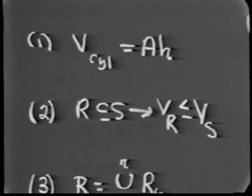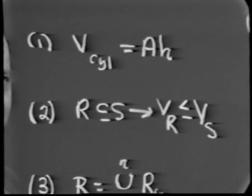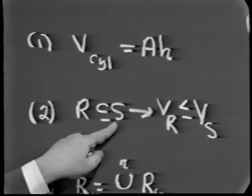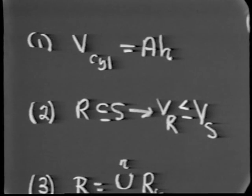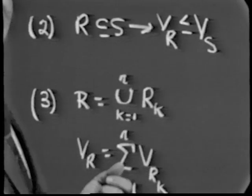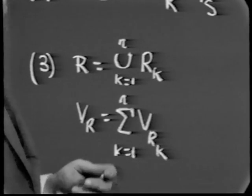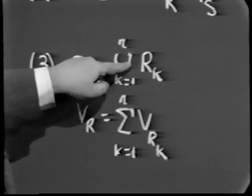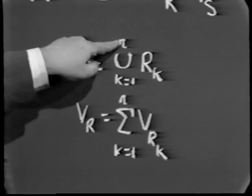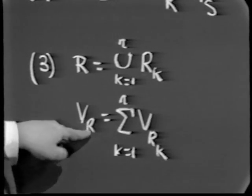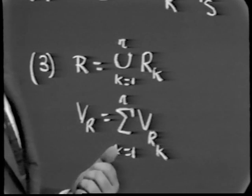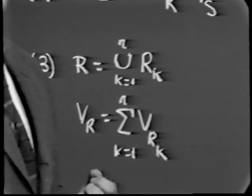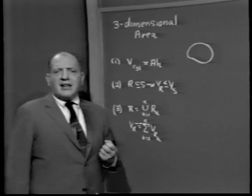The next assumption says that if a three-dimensional region R is contained in a three-dimensional region S, then the volume of R is less than or equal to the volume of S. Finally, we assume that if a region is made up of the union of N non-overlapping regions R₁ through Rₙ, then the volume of the whole region equals the sum of the volumes of the constituent parts. Notice that except for the fact that cylinder replaces rectangle, the basic axioms for volume are precisely the same as the axioms for area.